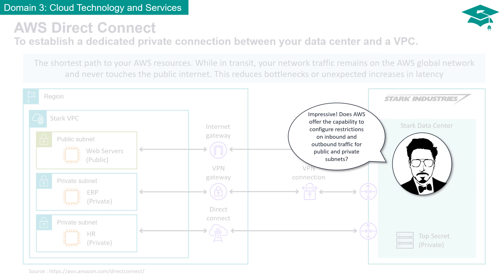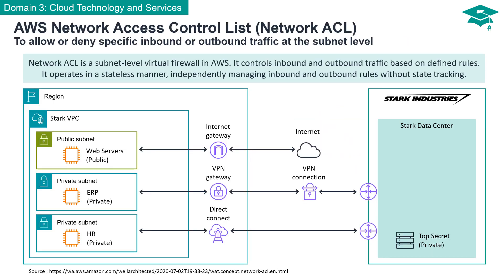Does AWS offer the capability to configure restrictions on inbound and outbound traffic for public and private subnets? AWS Network Access Control List, often referred to as Network ACL, operates at the subnet level, acting as a virtual firewall in the AWS environment. Network ACL plays a vital role in regulating the flow of traffic, enabling you to allow or deny specific inbound and outbound traffic based on your defined rules. Unlike some other security components, Network ACL operates in a stateless manner, meaning it handles inbound and outbound rules independently without the need for state tracking.